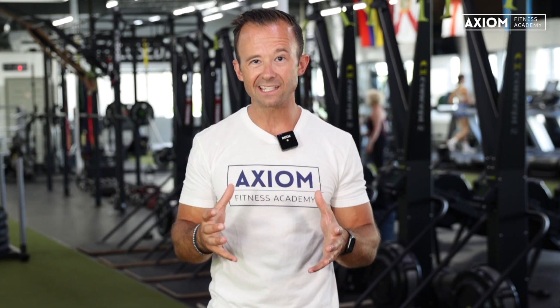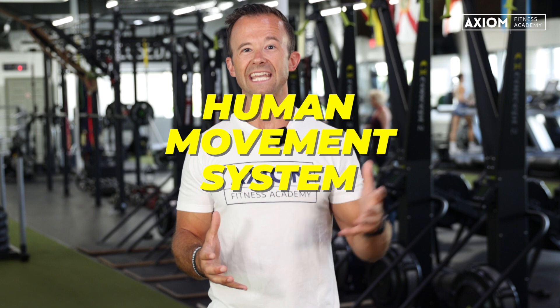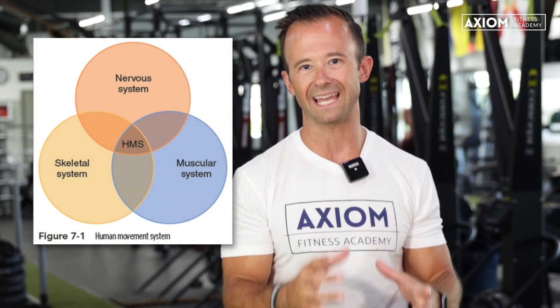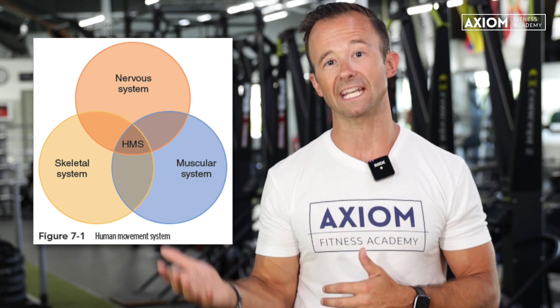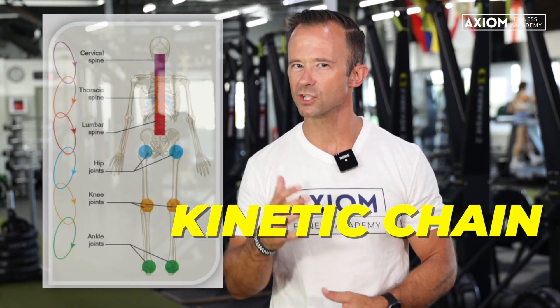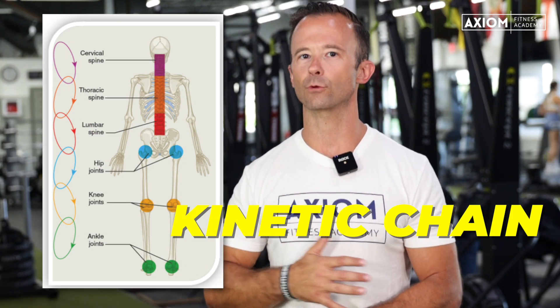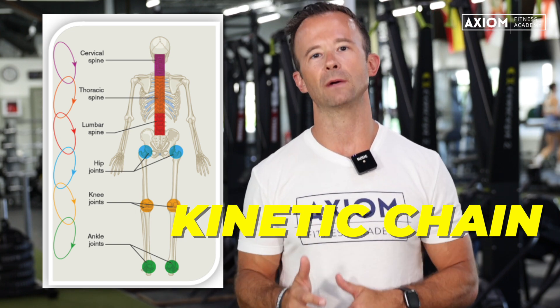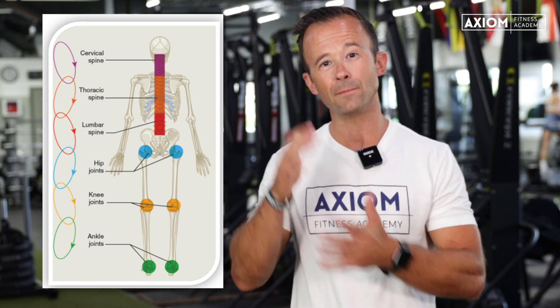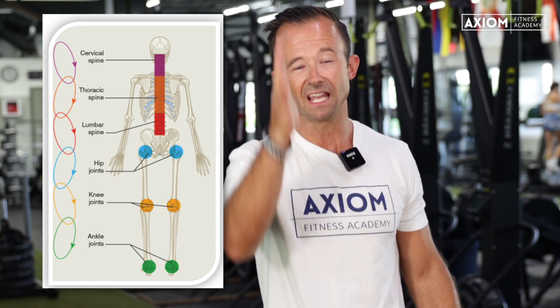One of the main concepts we want to make sure you understand in chapter five — because it comes back up again in chapter seven — is what is the human movement system: this integration of your nervous system, your muscular system, and your skeletal system all working together. This chapter also introduces the concept known as the kinetic chain, which is simply the fact that our body is interconnected and forces translate from joint to joint.